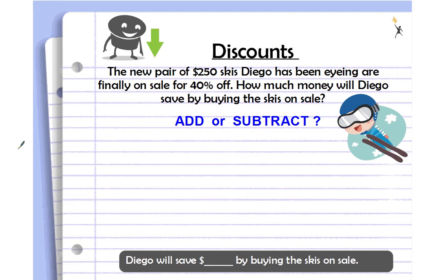Okay, problem number two — discounts. A new pair of $250 skis that Diego has been eyeing are finally on sale for 40 percent off. How much money will Diego save by buying the skis on sale? Again, it's not asking for the new sale price, just how much he will save, so we're not adding or subtracting on this particular problem.